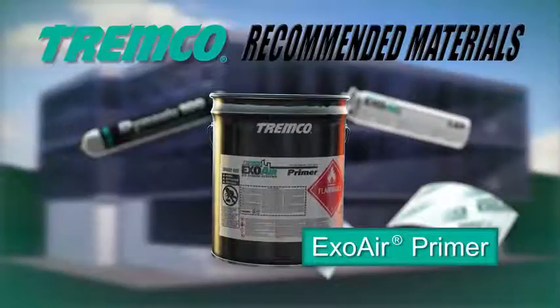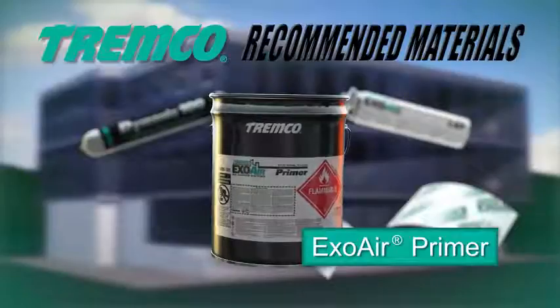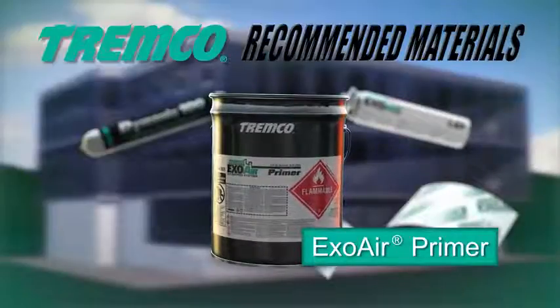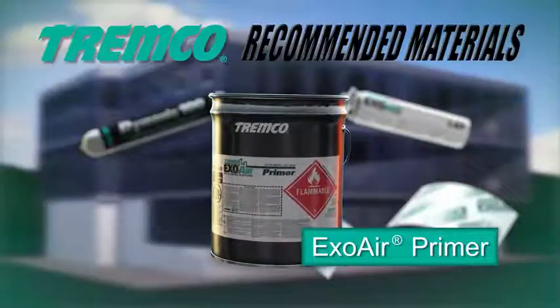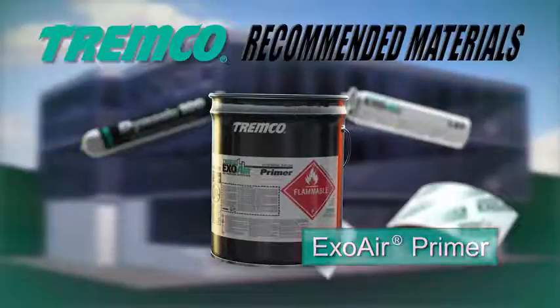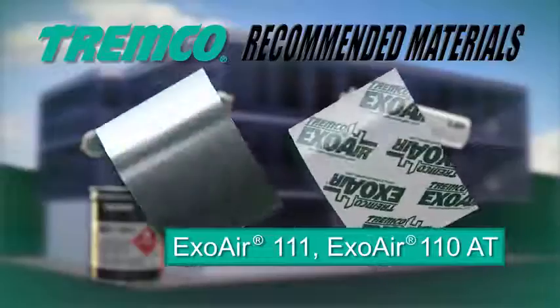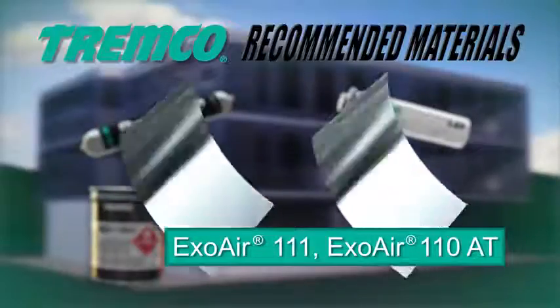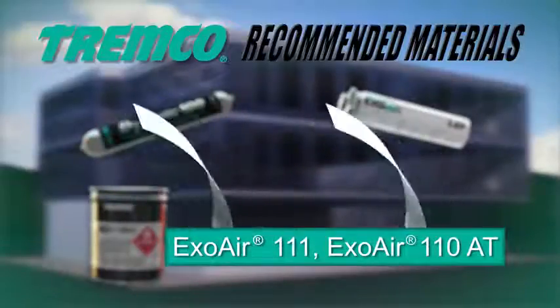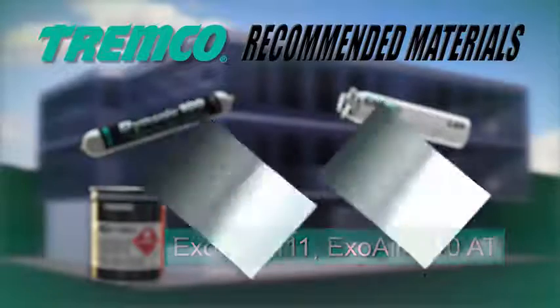ExoAir Primer is specifically formulated for use with the ExoAir line of air barrier systems, ensuring compatibility with all components required to create the full assembly. ExoAir 111 and ExoAir 110 AT are composite 24 mm sheets designed for use as the membrane or as a component of an air barrier system.